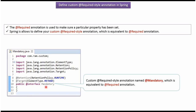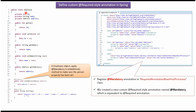Here I have defined the mandatory annotation, which is equivalent to the at-required annotation. Here I have defined the class Employee. It has three properties: id, name, and address. Address is the dependent object, and there are setter and getter methods for these three properties. I have also overwritten the toString method. Here I have applied the at-mandatory annotation in the setAddress method, which will make sure the address object is set in the employee object before we use it in our application.